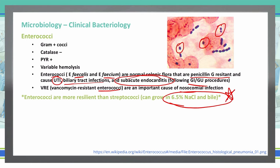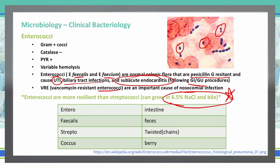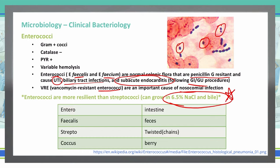Some things to help you remember Enterococci: 'Entero' is a root word for intestine, and 'faecalis' is obviously very much associated with feces. Continuing, 'strepto' means long twisted chains, and 'coccus' means berry. You can use those Latin roots to help you understand what some of these specific bacteria involve.